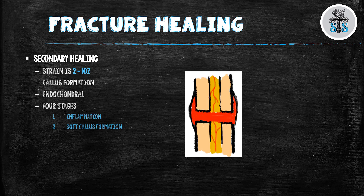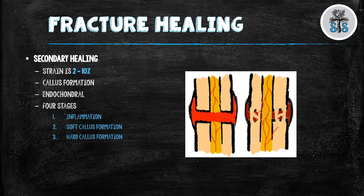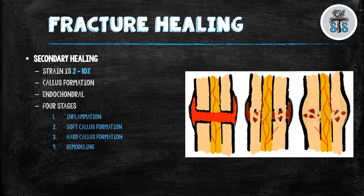After a couple of weeks, a soft primary callus forms. Then, with endochondral bone formation, the osteoblasts lay down bone and a hard callus forms. This process takes many weeks to occur, and there are many factors that go into how well the bone forms. Lastly, there's remodeling — this takes that large callus and trims it down to relatively what it looked like before, a process that takes months and months. Types of fracture fixation used in secondary healing include casting, external fixation, and intramedullary nailing. Knowing the timeline, the four stages, and examples of secondary healing is very high yield.